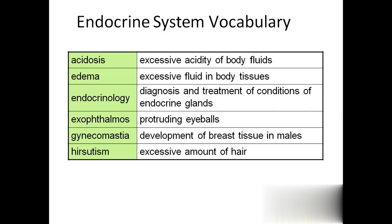Next, endocrinology, which is the science dealing with the diagnosis and treatment of conditions of endocrine glands. Exophthalmos is a condition of hyperthyroidism - with excessive secretion of thyroid hormones T3 and T4, one of the symptoms is exophthalmos. Exo means outside, ophthalmos means eyeball. The eyeball appears to be protruding out of the eye.